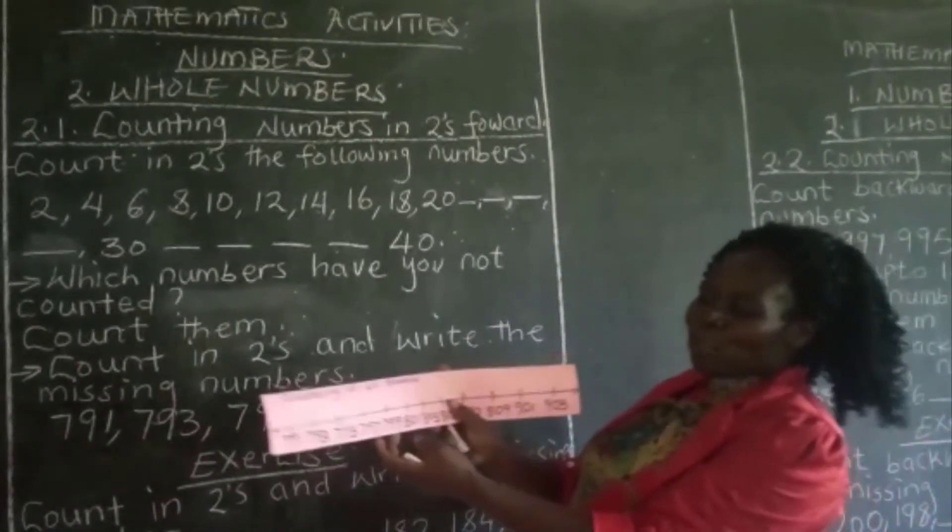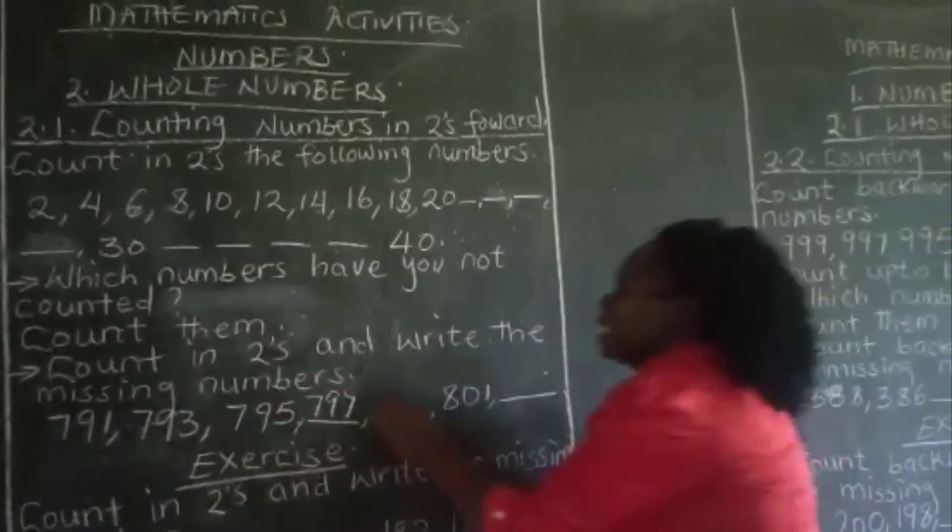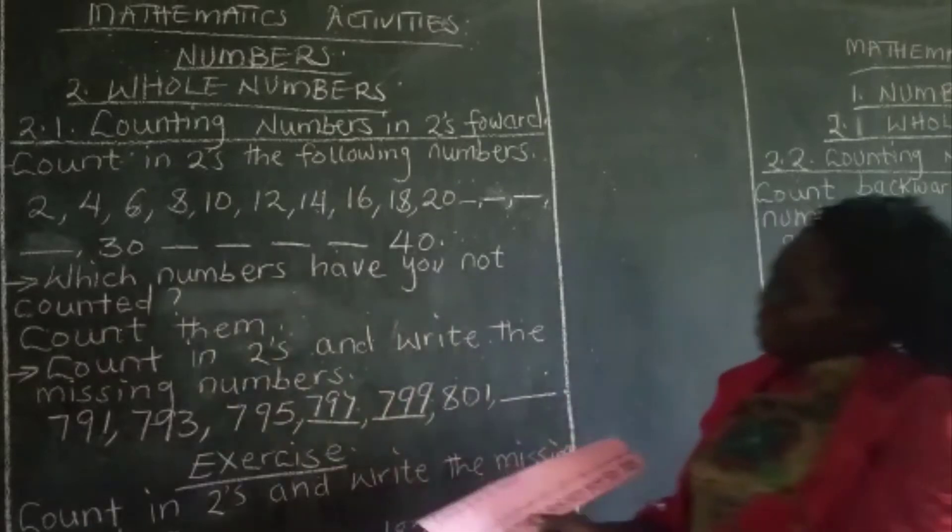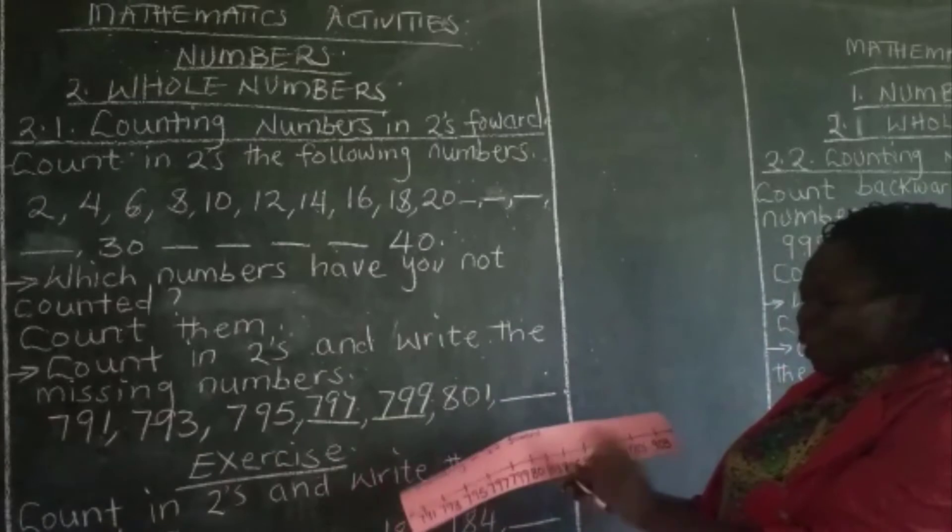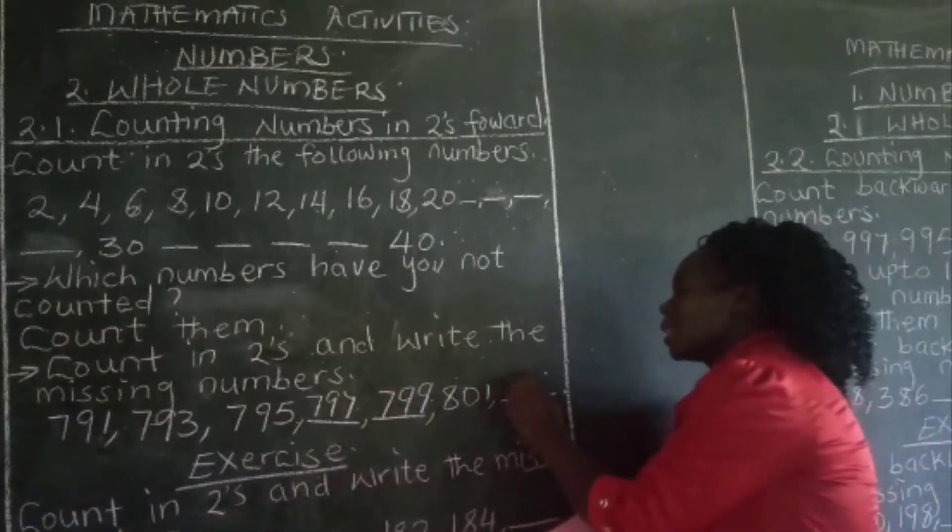Okay, from there, we go to the next number, which is 799. The next number is 801, it is here. And so our next number will be 803, and we shall write it there.